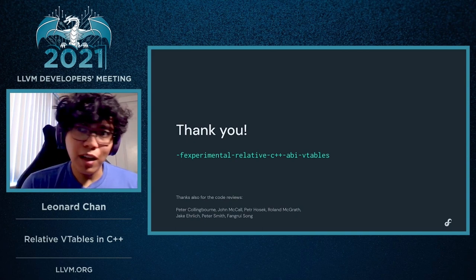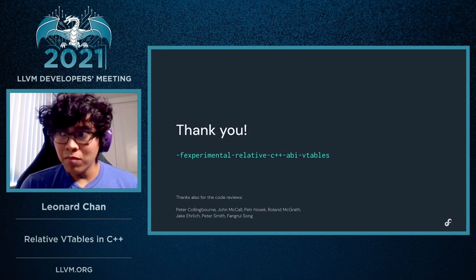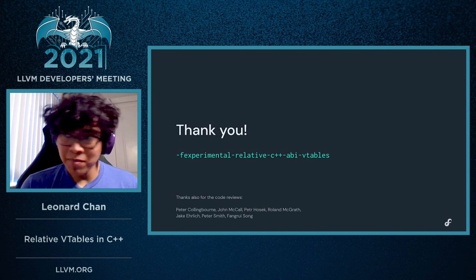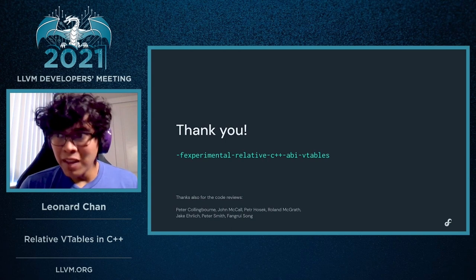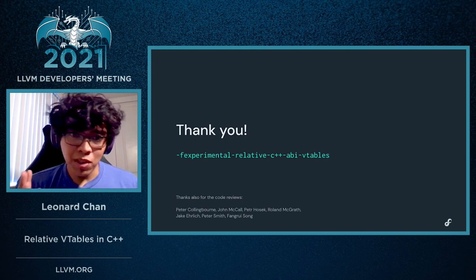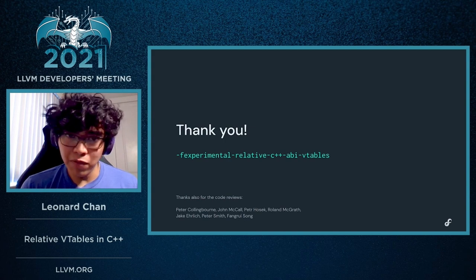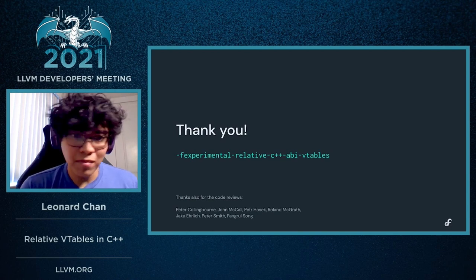And that's it. Thank you. If you want to use Relative VTables, you can use it by just adding this flag in your build and using the appropriate version of libc++. It's also worth mentioning that even though it says 'experimental' in the name, this feature is fully production ready and usable, and it's used by default for Fuchsia. If you're building a Fuchsia application, you're going to be using Relative VTables by default. I also want to say thank you to the reviewers who helped me review and land this code along the way.